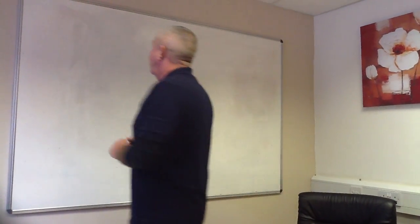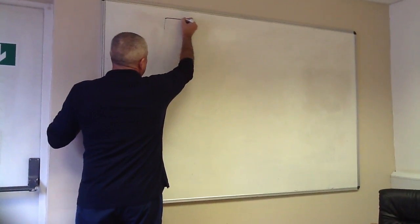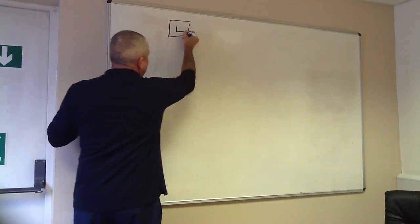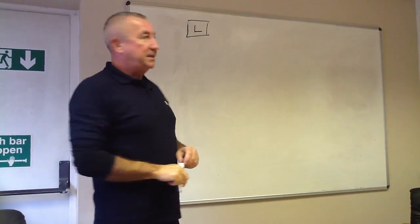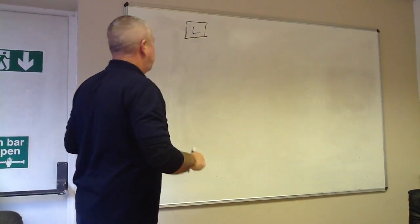So we are going to start off with a little square at the top here and I am just going to pop the letter L into that. That stands for the lungs. So this represents the pulmonary part of the vascular system.